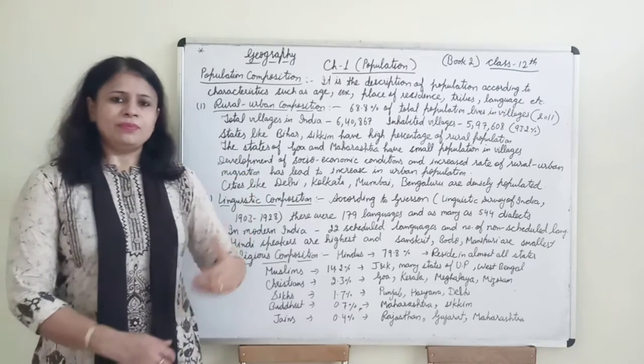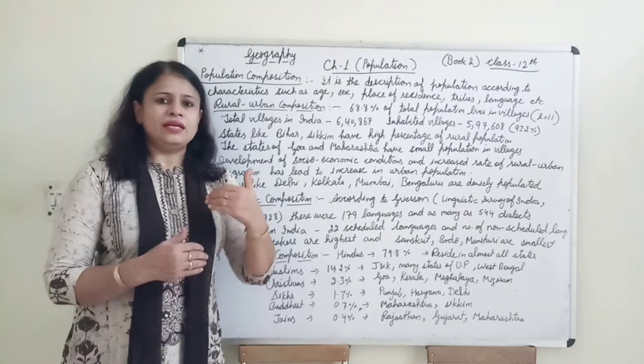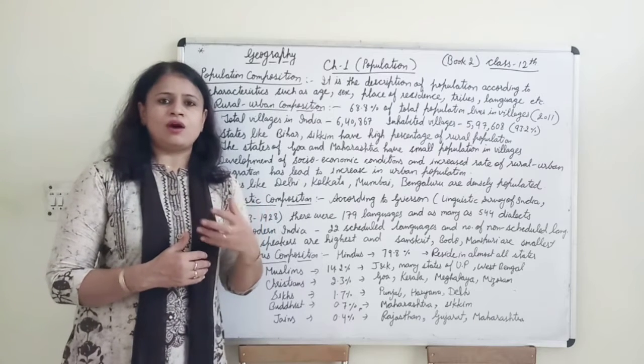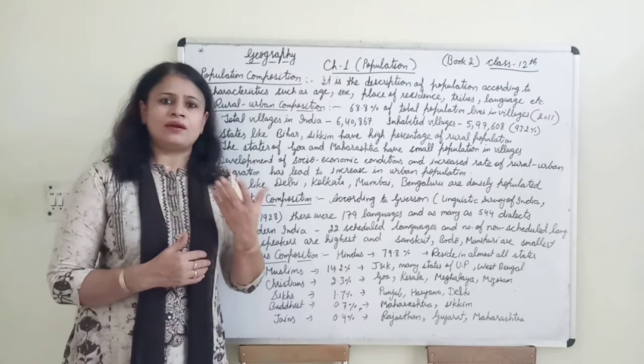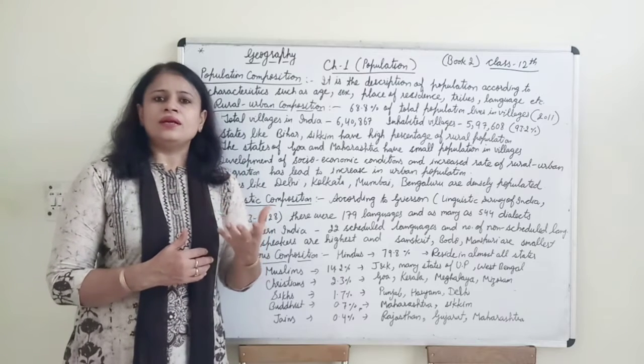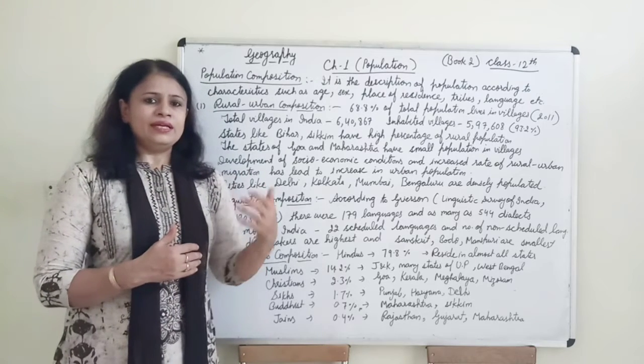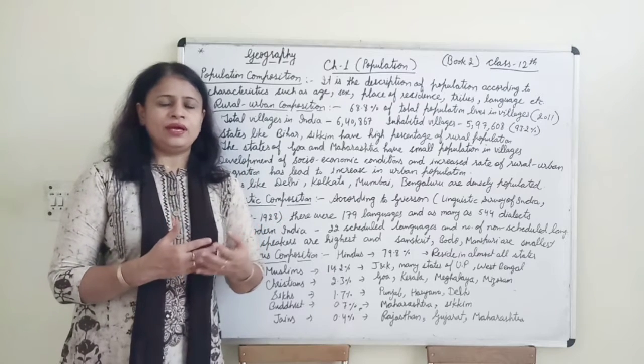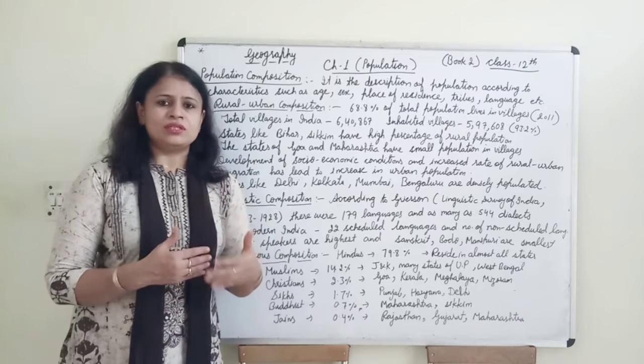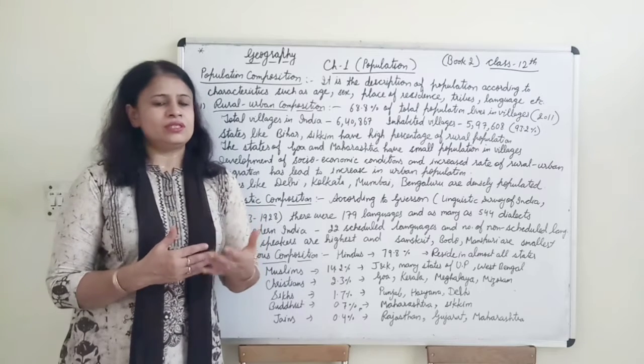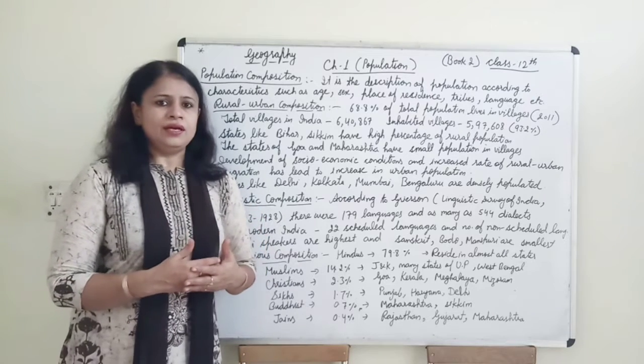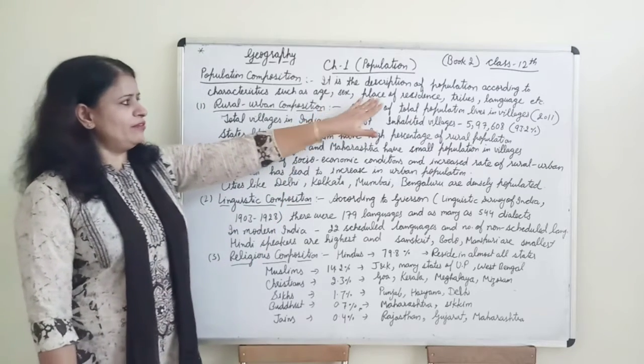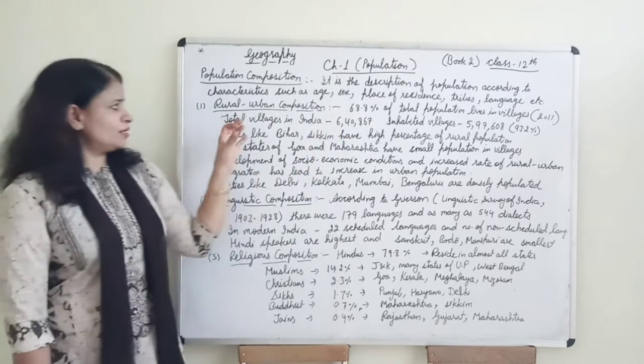In this topic we will see that if there is population classification on age, then how many people are children, how many are adolescent, how many are adult and how many are aged group. And if there is a religion based on how many people are in India, another religion like Muslim, Sikh, Jain, Buddhist, Christian. So here we will see on different basis of population description.